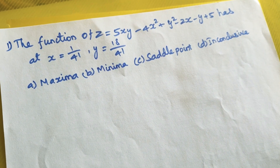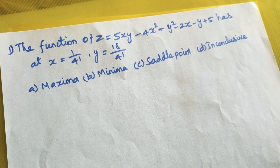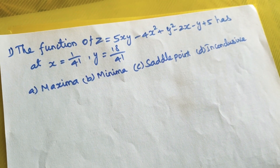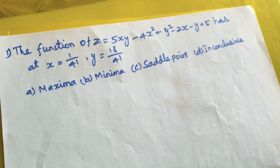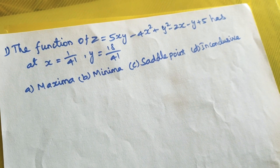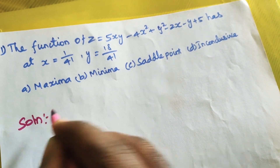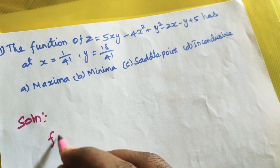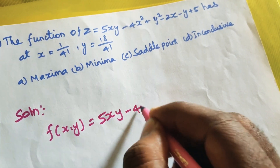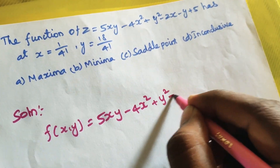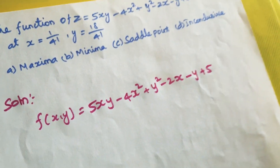Hi friends, maximum minima first question. The function f(x,y) = 5xy - 4x² + y² - 2x - y + 5 has at x = 1/41 and y = 18/41 — is it a maximum, minima, saddle point, or inconclusive? Simple. That is f(x,y) = 5xy - 4x² + y² - 2x - y + 5.